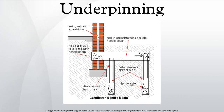Piled raft underpinning systems are commonly used when an entire building needs to be underpinned. The internal floors are completely removed, a grid of piles is installed, and a reinforced concrete raft is then constructed over the complete floor level, picking up and fully supporting all external and internal walls.